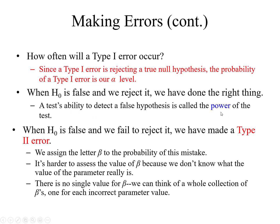We need to conduct a power test to evaluate whether the acceptance and rejection decisions we already made are right or wrong. When H0 is false and we fail to reject it, we have made a type 2 error. We assign the letter beta to the probability of this mistake. It is harder to assess the value of beta because we don't know the true value of the parameter. There is no single value for beta — we can think of a whole collection of betas, one for each incorrect parameter value.